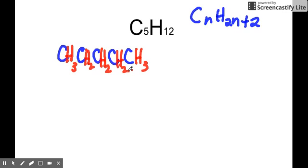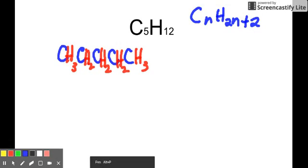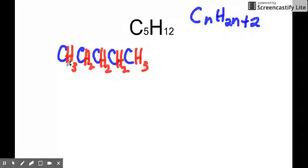That is the very first isomer you can get for C5H12, in which you notice that if you count all the carbon and all the hydrogen, you will get the same chemical formula. Second isomer. How do we draw the second isomer? You start from the simplest way of branching out, in which you start branching out with having one carbon.